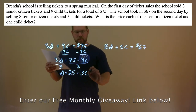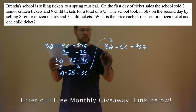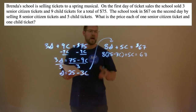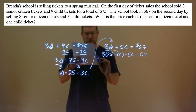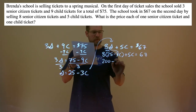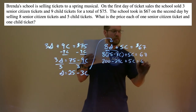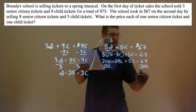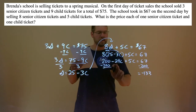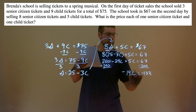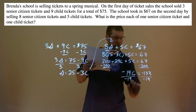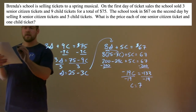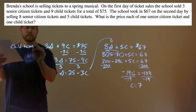We take that information and plug it in for S: 8 times (25 minus 3C) plus 5C equals 67. Distribute the 8: 200 minus 24C plus 5C equals 67. Subtract 200 from both sides: 67 minus 200 is negative 133, and negative 24C plus 5C is negative 19C. Divide both sides by negative 19, and C equals 7. A child ticket costs $7.